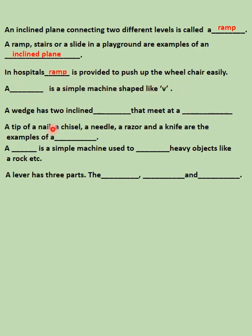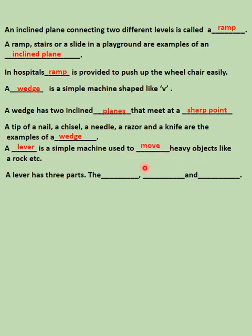A wedge is a simple machine shaped like a V. A wedge has two inclined planes that meet at a sharp point. A tip of a nail, a chisel, a needle, a razor, and a knife are examples of a wedge. A lever is a simple machine used to move heavy objects like a rock. A lever has three parts: the fulcrum, the load, and the effort.